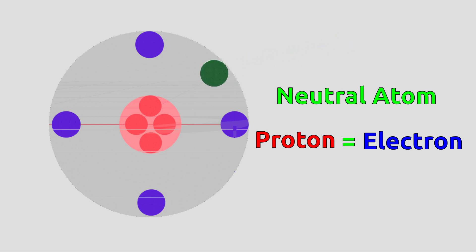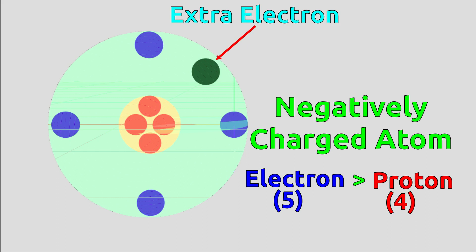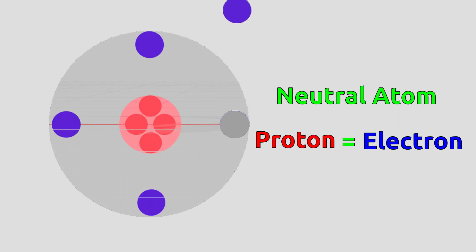If an atom has more electrons compared to protons, it becomes negatively charged. If an atom has fewer electrons compared to protons, it becomes positively charged.